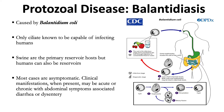Cysts are the stage responsible for transmission of balantidiasis. The host — either human or swine — ingests contaminated food or water containing cysts. Following ingestion, excystation occurs in the small intestine, and trophozoites colonize the large intestine, where they reside in the lumen and replicate by binary fission. Trophozoites then undergo encystation to produce infective cysts. Some trophozoites invade the wall of the colon and multiply, causing ulcerative pathology, and mature cysts are passed with feces.